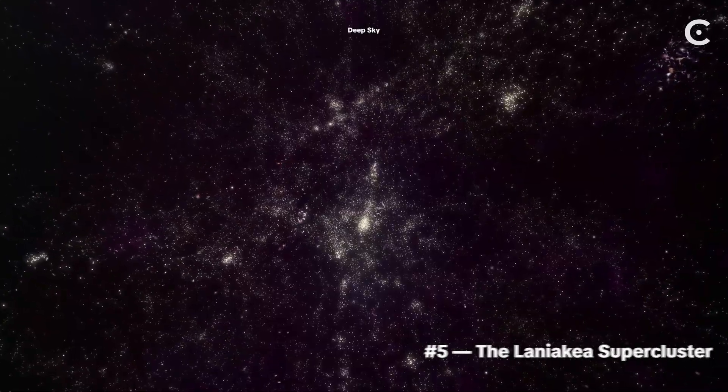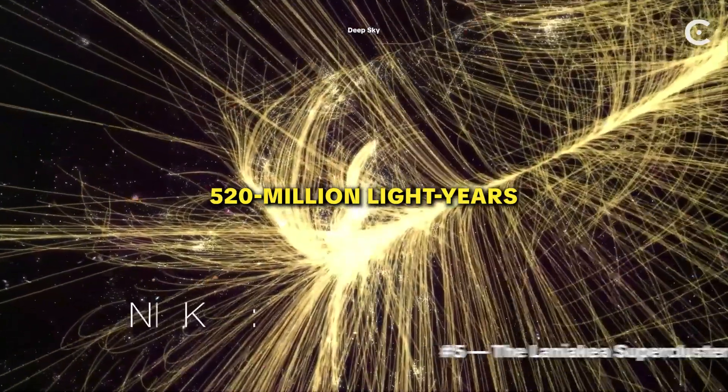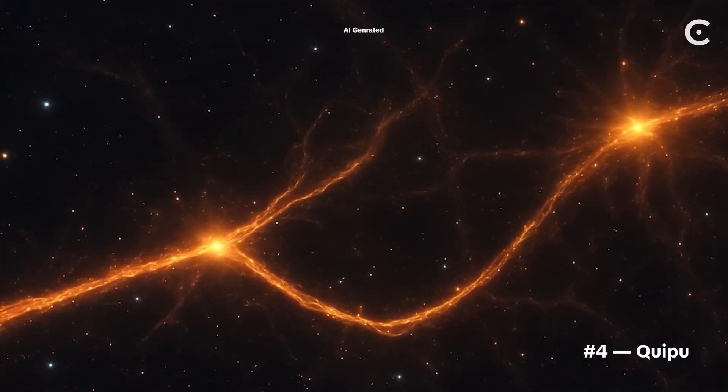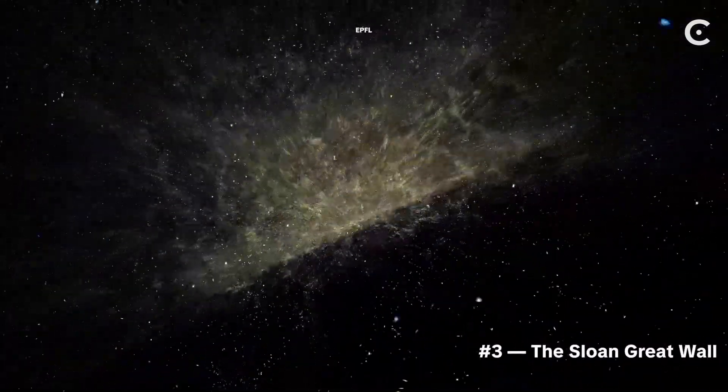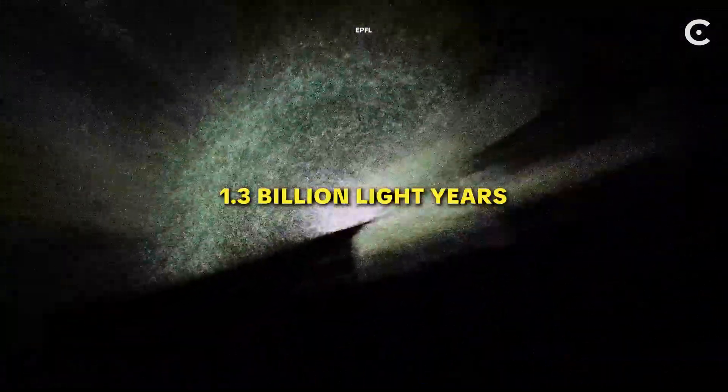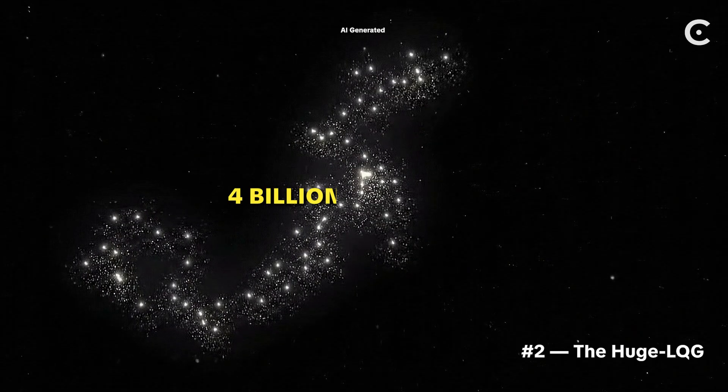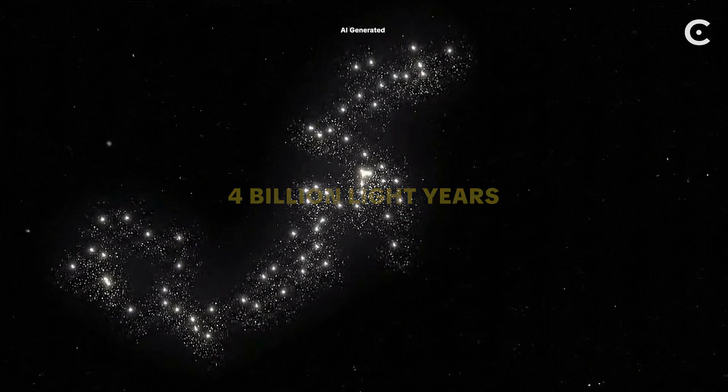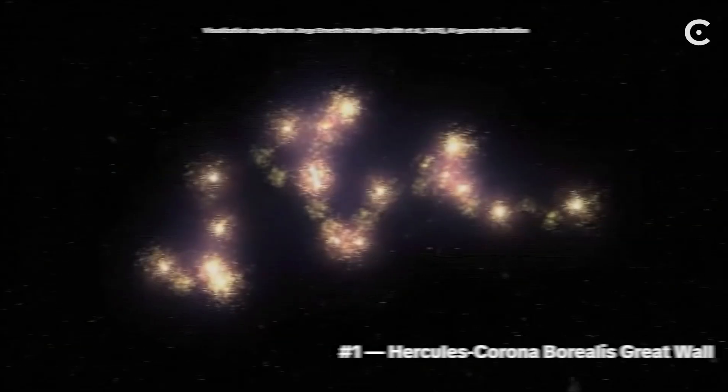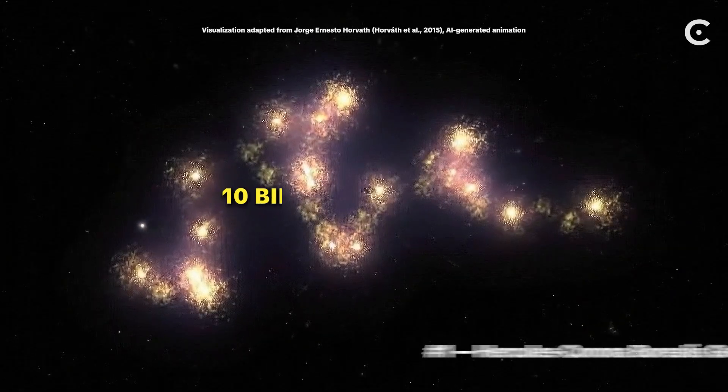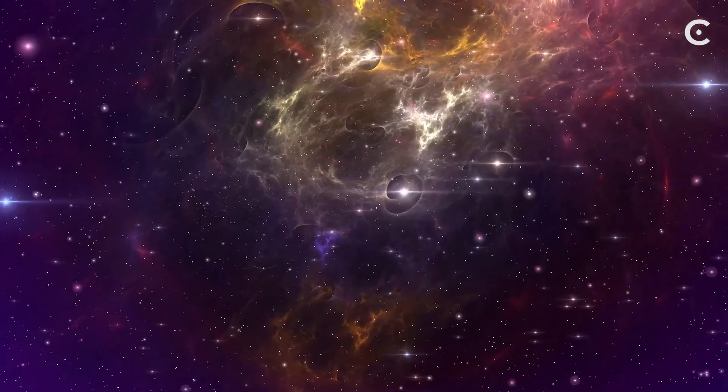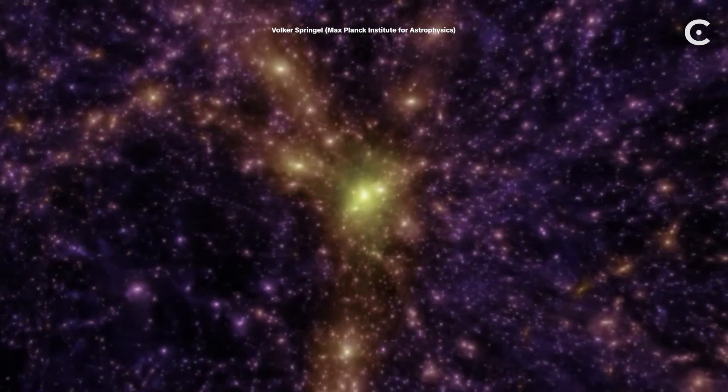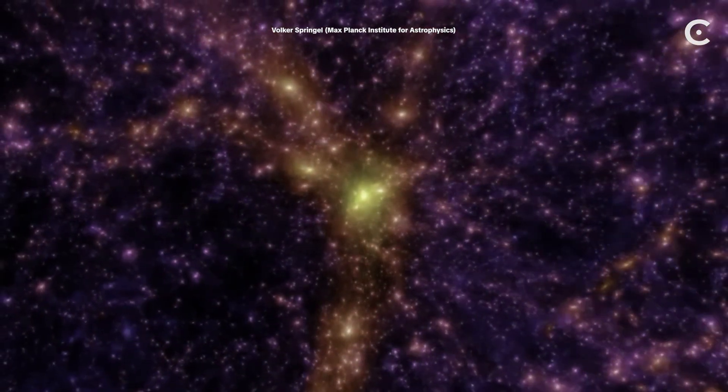So let's recap. We started in Laniakea, our 520 million light-year home supercluster. We met the newly discovered Quipu, a 1.3 billion light-year branching web in our cosmic neighborhood. We crossed the Sloan Great Wall, 1.37 billion light-years of galaxies pushing against the limits of what should exist. We questioned the huge LQG, a 4 billion light-year quasar clustering that might be real, or might be a cosmic coincidence. And we ended at the Hercules-Corona Borealis Great Wall, a 10 billion light-year mystery that could rewrite our understanding of the universe. Here's the takeaway. The universe is not only bigger than we imagined, it's also lumpier, stranger, and more structured than many expected at these scales.